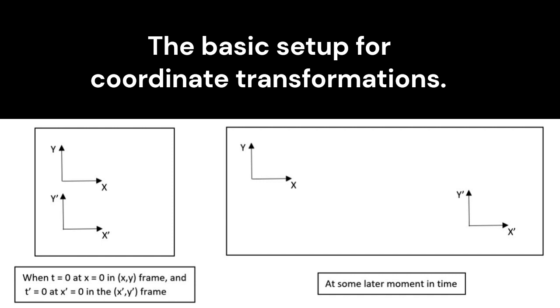At some time later, the frames have separated, and in the unprimed frame, the xy frame, the other frame has a positive velocity, but in the primed frame, the other frame, the unprimed frame, has a negative velocity relative to it.